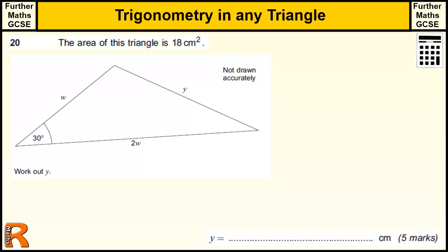Trigonometry in any triangle is a further maths GCSE question, which is a level 2 qualification. It is on a calculator exam, so you are allowed to use your calculator. This question is about trigonometry in any triangle. We are told the area of this triangle is 18cm squared and we are going to work out why.